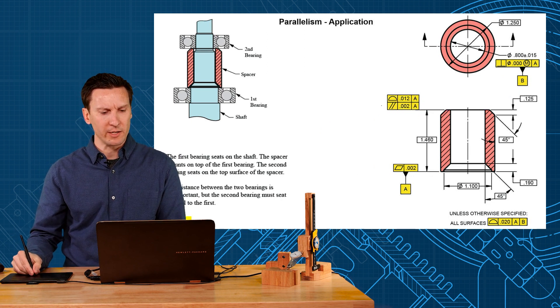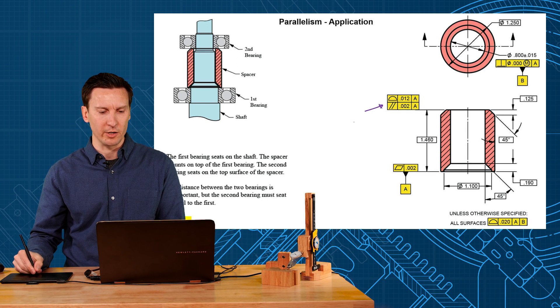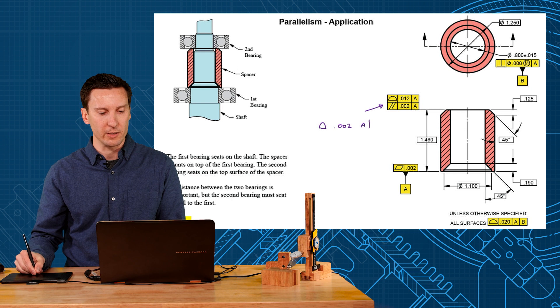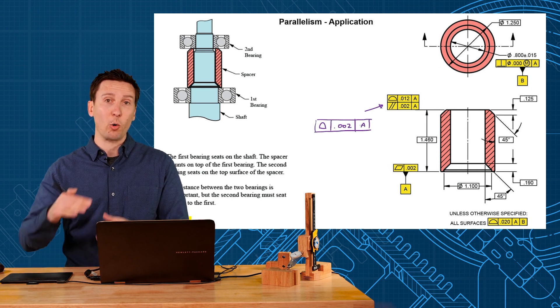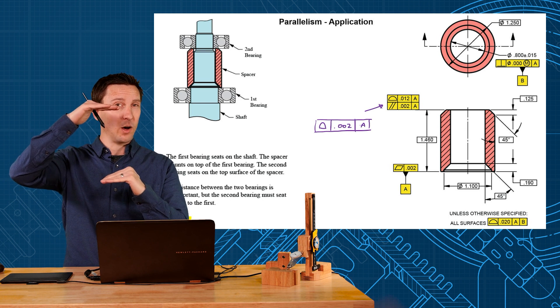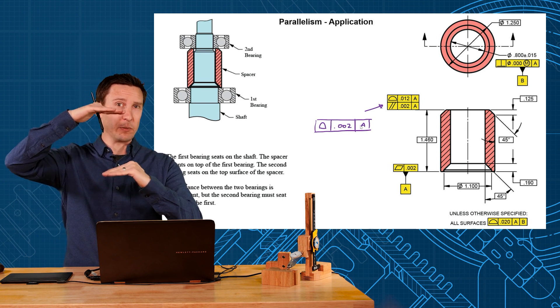Now some people say, why do you make it so complicated with these two boxes here? Why don't you just use one symbol and just put a tight profile tolerance on there of 2,000 relative to the datum? Now that would function correctly, but the problem is you're holding that distance to plus or minus one. And we don't need the distance to be plus or minus one.